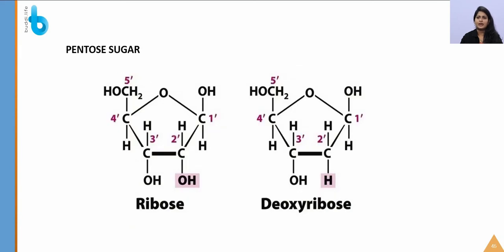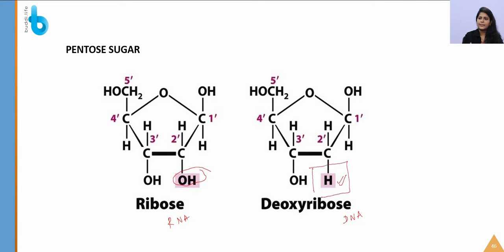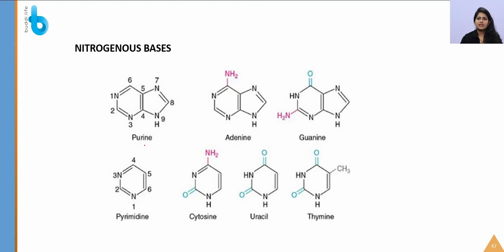Sugars in nucleic acids are pentose sugars: ribose is present in RNA and deoxyribose is present in DNA. In deoxyribose, the second position has only an H (no OH group), unlike ribose which has an OH at the second position — this is an important property of DNA stability. Uracil is present only in RNA, while thymine is present only in DNA. Purines contain a pyrimidine ring and an imidazole ring; adenine and guanine are the two purines.